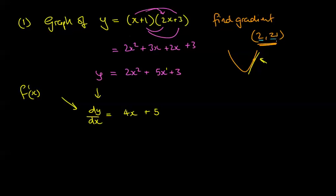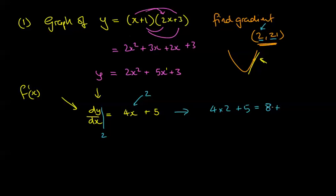To find the gradient at (2, 21), we plug in the x value, which is 2. So we evaluate: 4 times 2 plus 5 equals 8 + 5 = 13. So the gradient of the tangent at that point is 13.